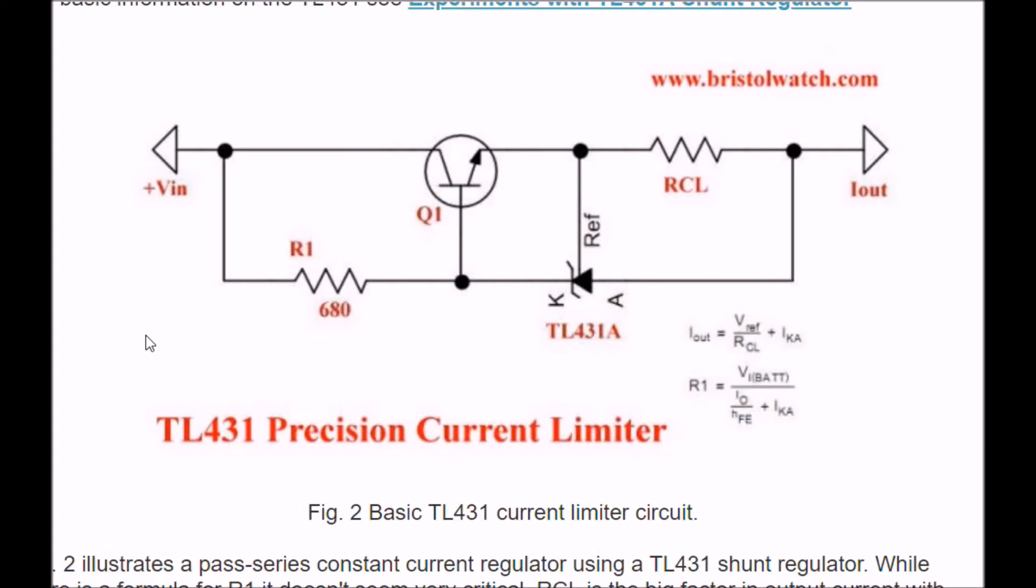This is the TL431 used with an NPN transistor to form, essentially, a precision current limiter. Consists of, really, just two resistors, R1 and RCL.